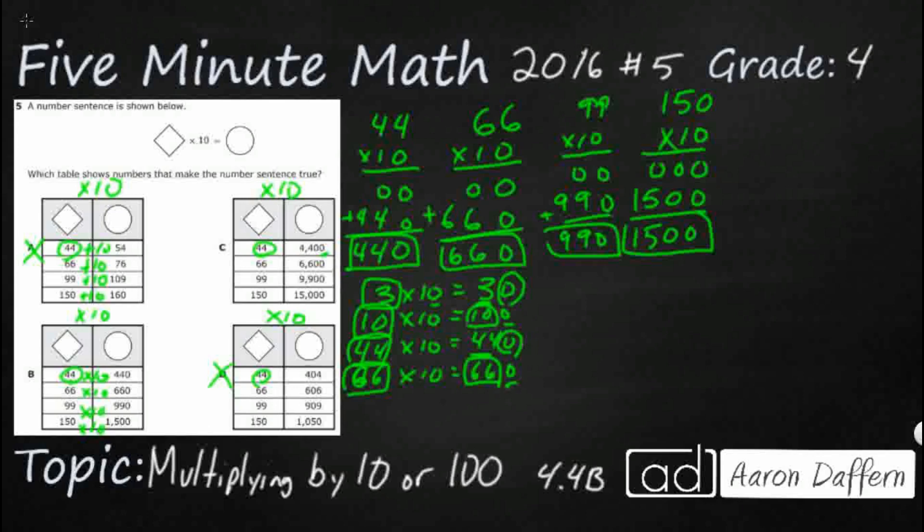C is close because they multiply this by 100. Because when you multiply 100, you just add two zeros. But our answer here is B.